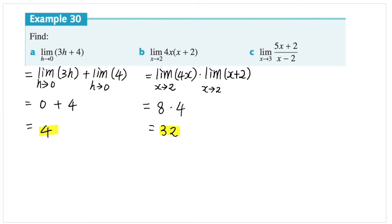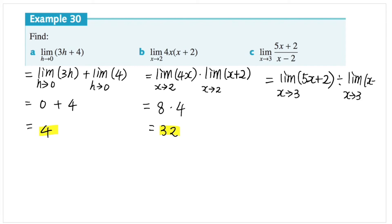The third question is division. Let's find the limits of each expression first. The limit of 5x plus 2 as x approaches 3, divided by the limit of x minus 2 as x approaches 3. So 5 times 3 equals 15, and 15 plus 2 equals 17, divided by 3 minus 2 equals 1. So the answer is simply 17. The limit of this function as x approaches 3 is 17.